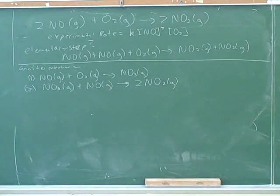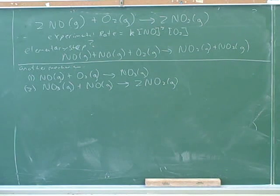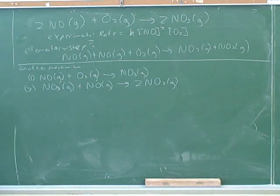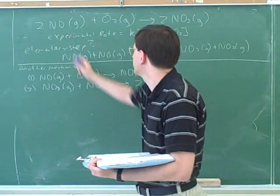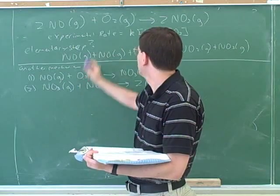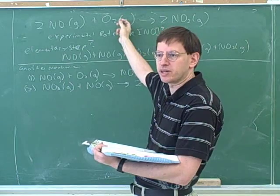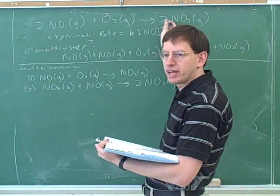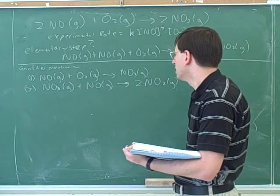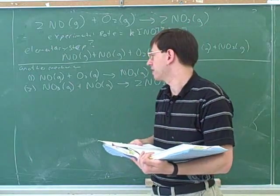So let's continue and see if we can find any other plausible candidates for what the right mechanism might be. We want to test whether maybe this is a plausible mechanism. What would be a good first step? Make sure that the elementary steps add up to the overall reaction. Two NOs on the left matches up. One O2 on the left matches up. This NO3 will cancel this NO3, which is good, because NO3 didn't appear in the overall reaction. And the two NO2s match up with this.